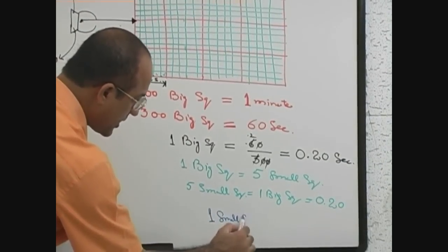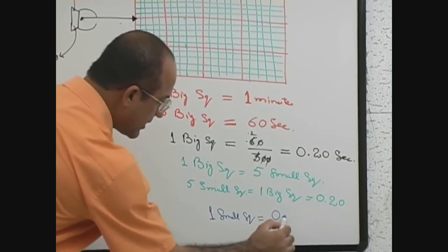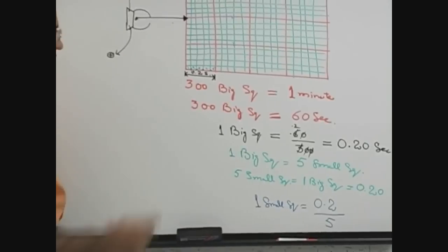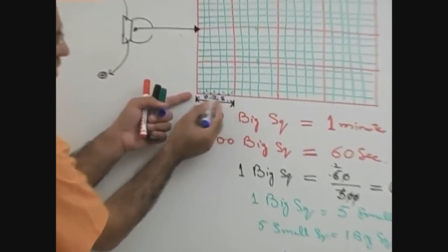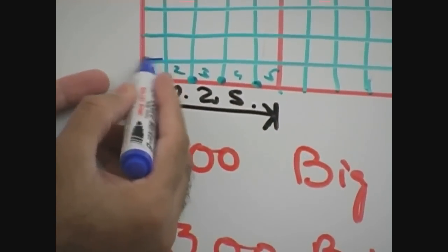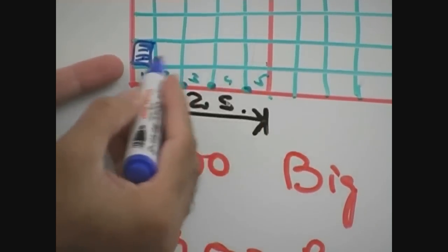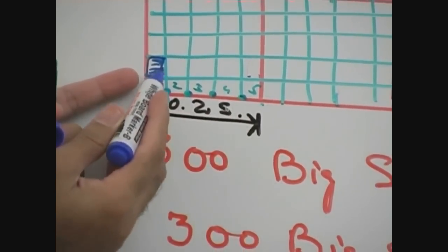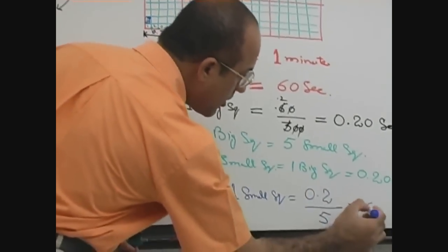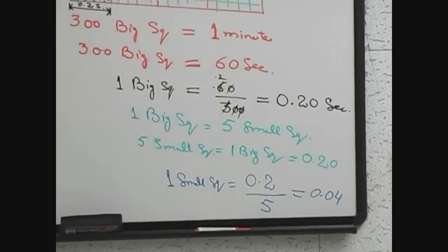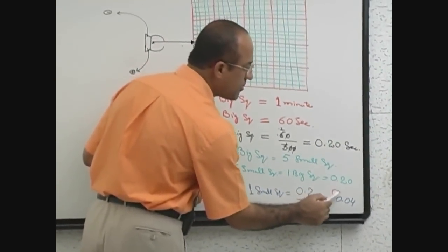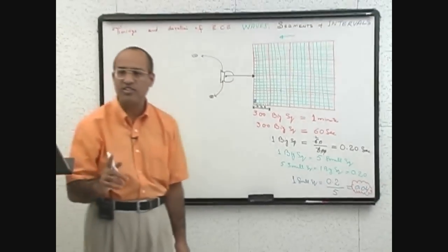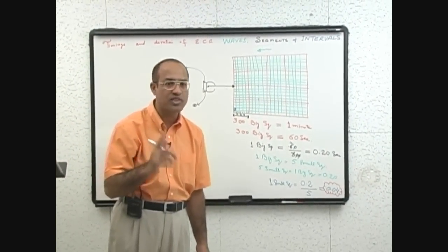One small square is equal to 0.2 second divided by 5. One big square was 0.2 second, and 1 small square will be one-fifth of the big square, so that will become 0.04 second. This is the most important timing you must remember. Today onward, as a doctor, you must remember that 1 small square on ECG paper is equal to 0.04 second.